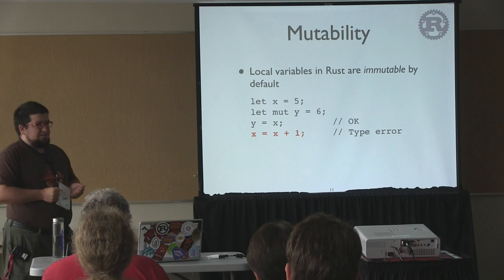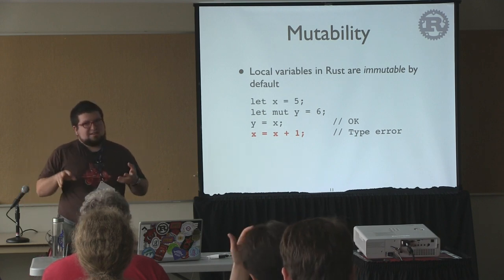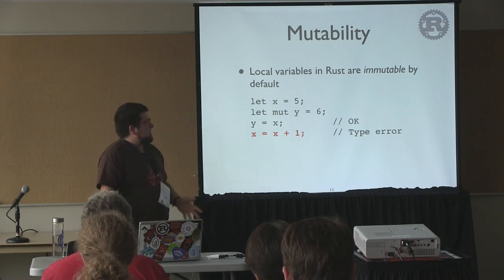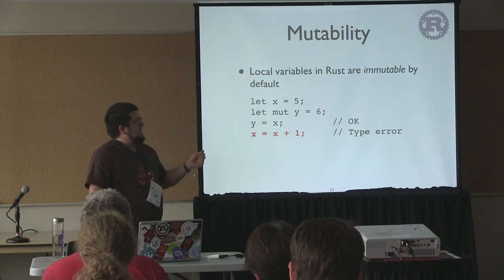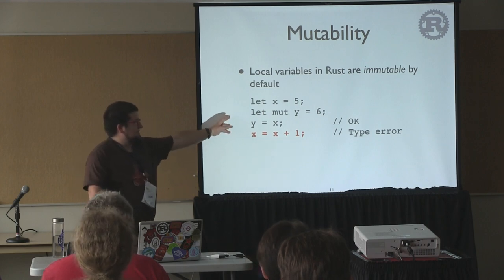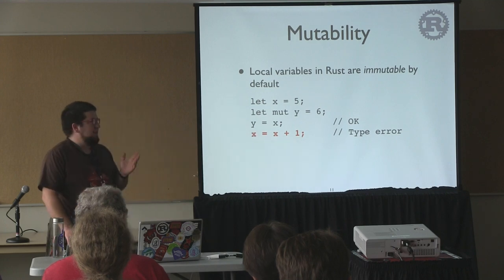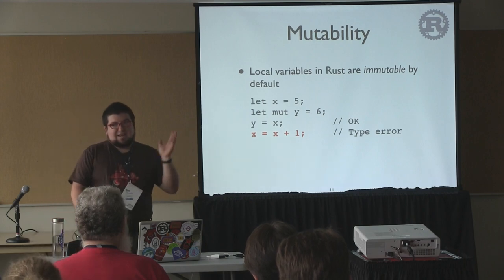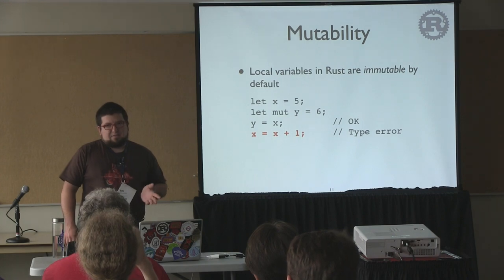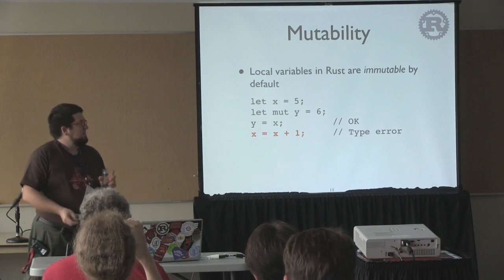The first Rust feature I want to talk about is explicit mutability. In Rust, when you declare a local variable, it's immutable by default — once assigned, you can never assign to it again. You write 'let x = 5' for an immutable variable. To make something mutable, you add the 'mut' qualifier: 'let mut y'. So 'y = x' is fine, but 'x = x + 1' will cause the compiler to reject it. We made this choice because accidental mutability is a huge source of bugs. It's better to declare when you meant to make something mutable.